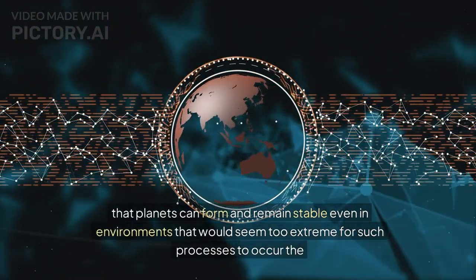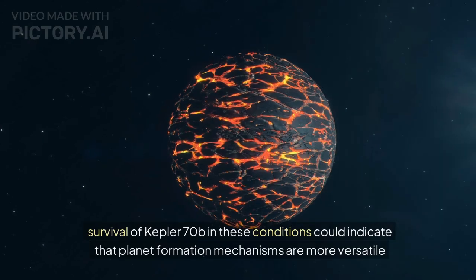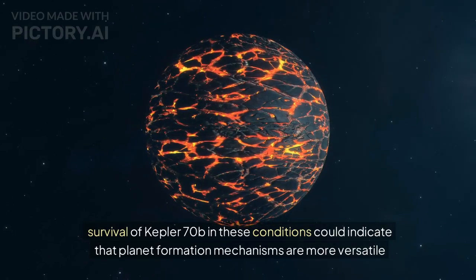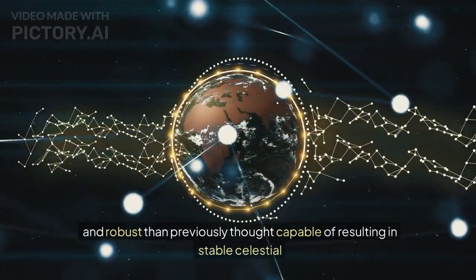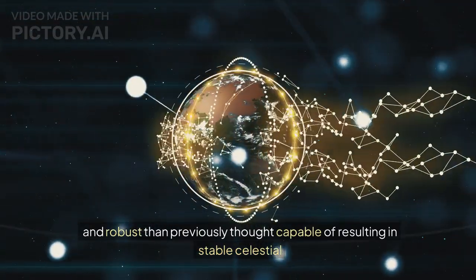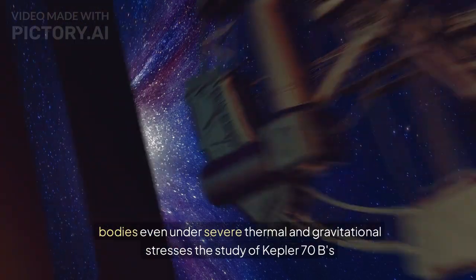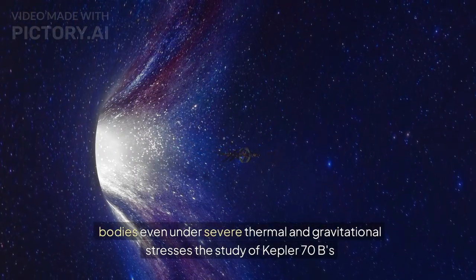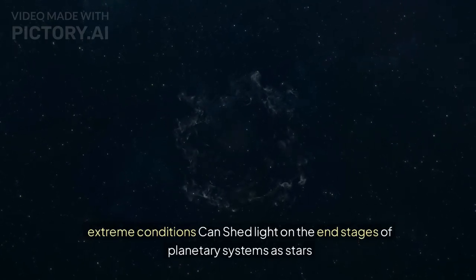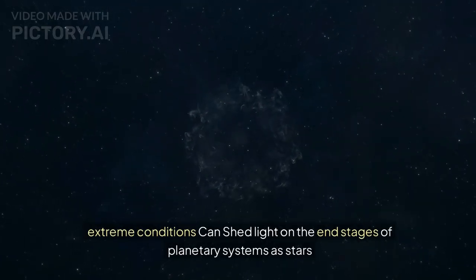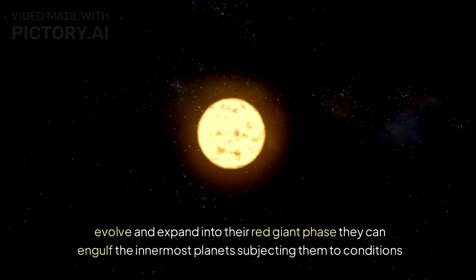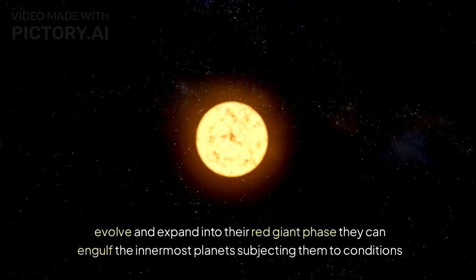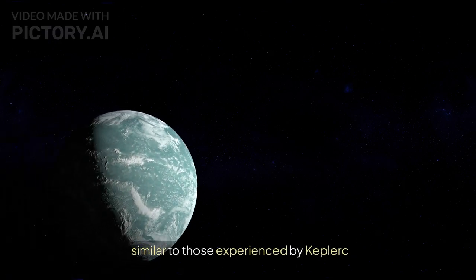The survival of Kepler-70b in these conditions could indicate that planet formation mechanisms are more versatile and robust than previously thought, capable of resulting in stable celestial bodies even under severe thermal and gravitational stress. The study of Kepler-70b and these extreme conditions can shed light on the end stages of planetary systems. As stars evolve and expand into their red giant phase, they can engulf the innermost planets, subjecting them to conditions similar to those experienced by Kepler-70b.